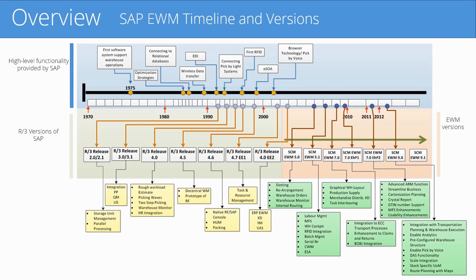SAP introduced the SAP Extended Warehouse Management System in 2006 with SAP EWM 5.0. Some of the early functionality of SAP EWM was slotting, warehouse orders, and warehouse monitoring. The latest version of SAP EWM is 9.3 and it was introduced in 2015.